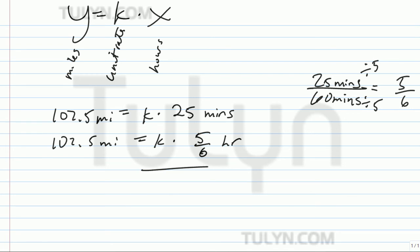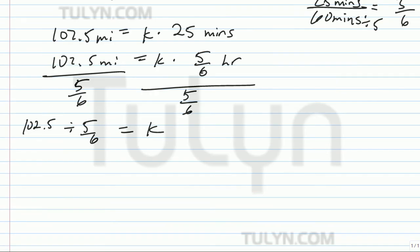So go ahead and divide by 5, 6 on both sides. 102.5 divided by 5, 6 equals k, your unit rate. So 102.5 over 1, that's the same thing as 1 is 2.5 because it's just divide by itself. Division turns into multiplication. 5, 6 turns into reciprocal. It's 6 fifths now. Equals k.